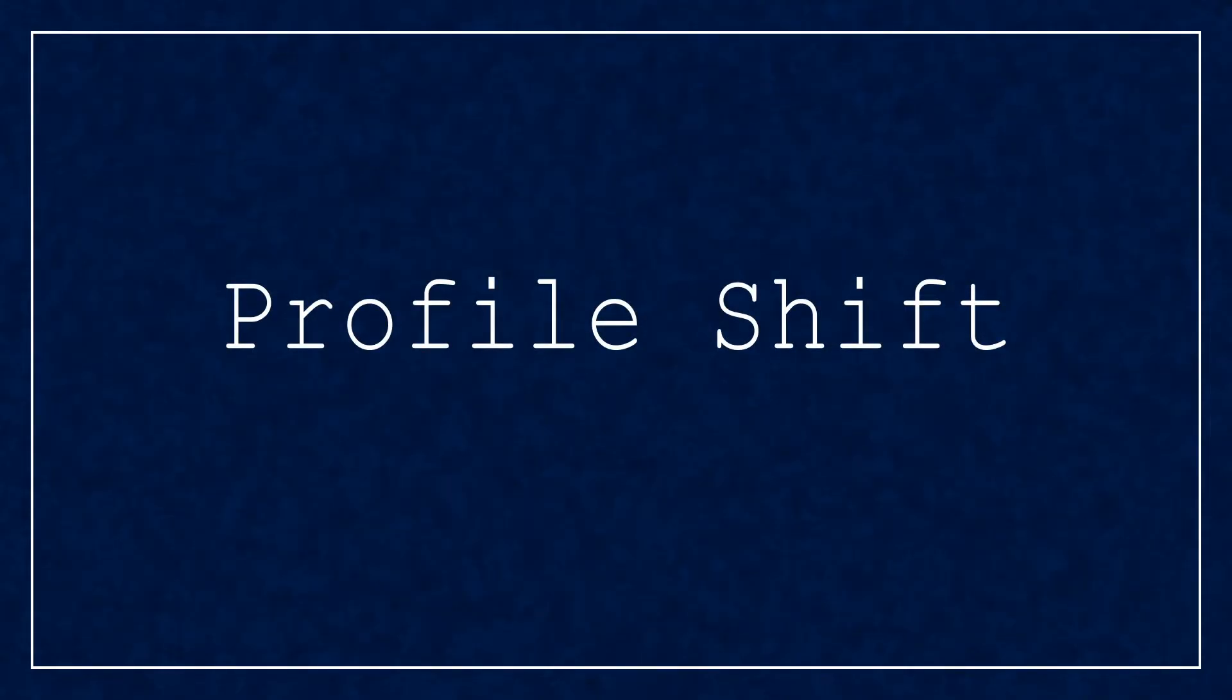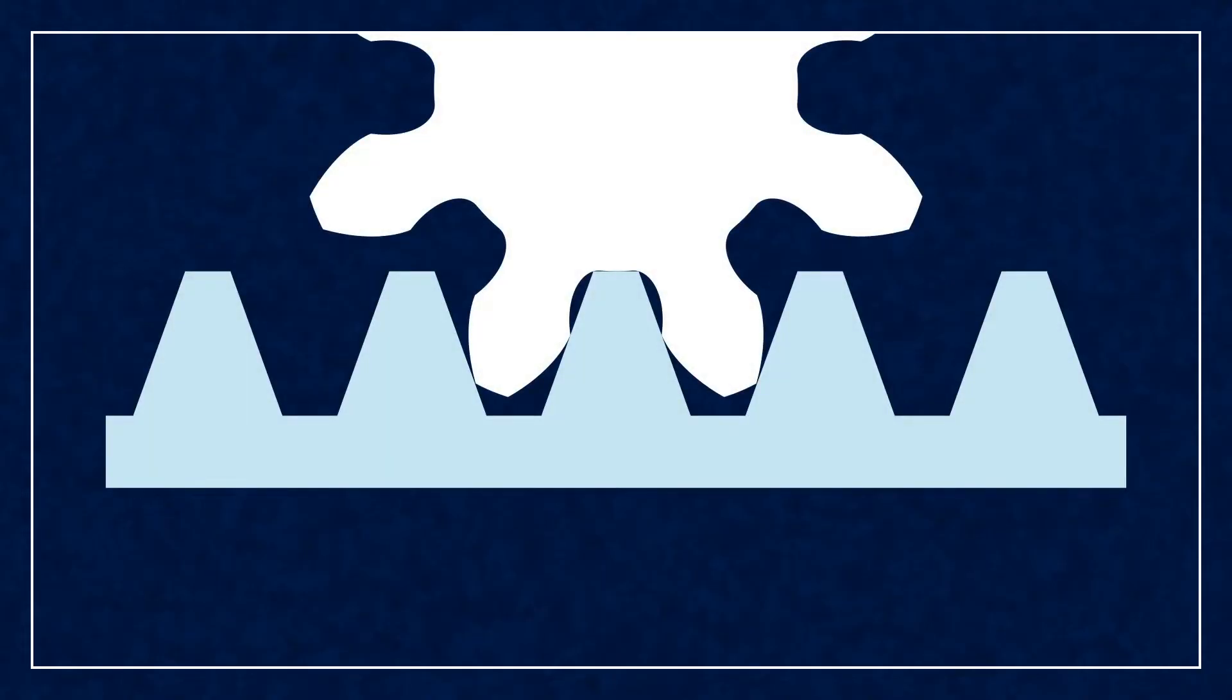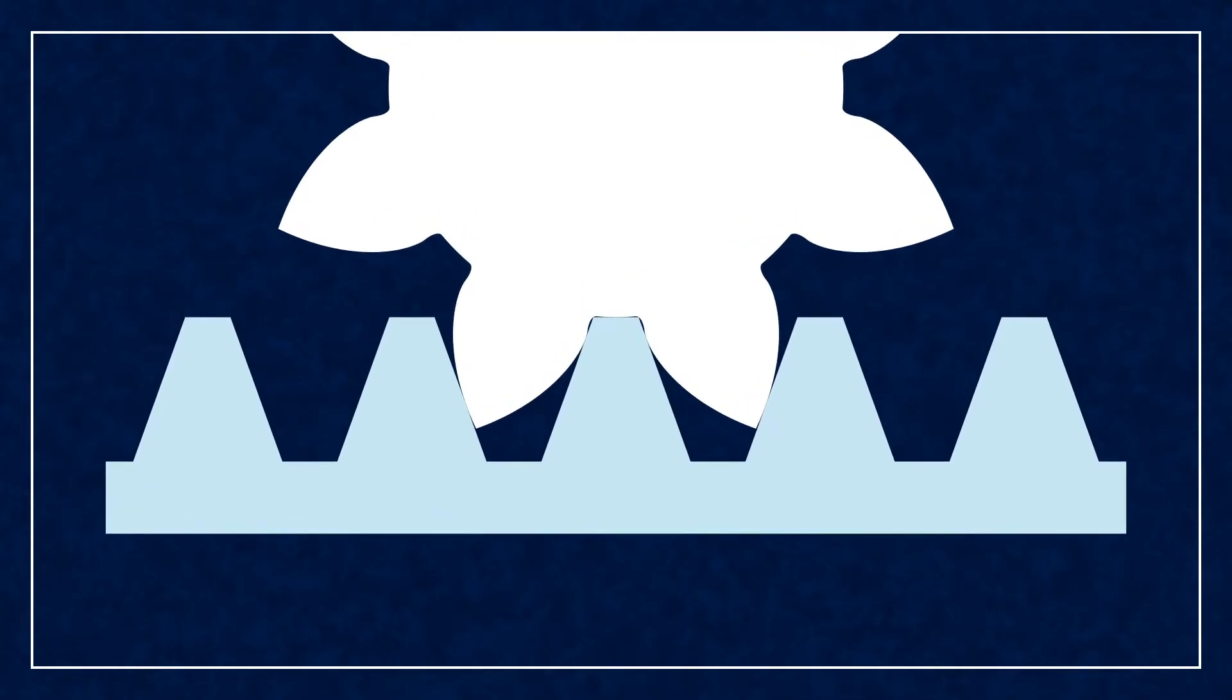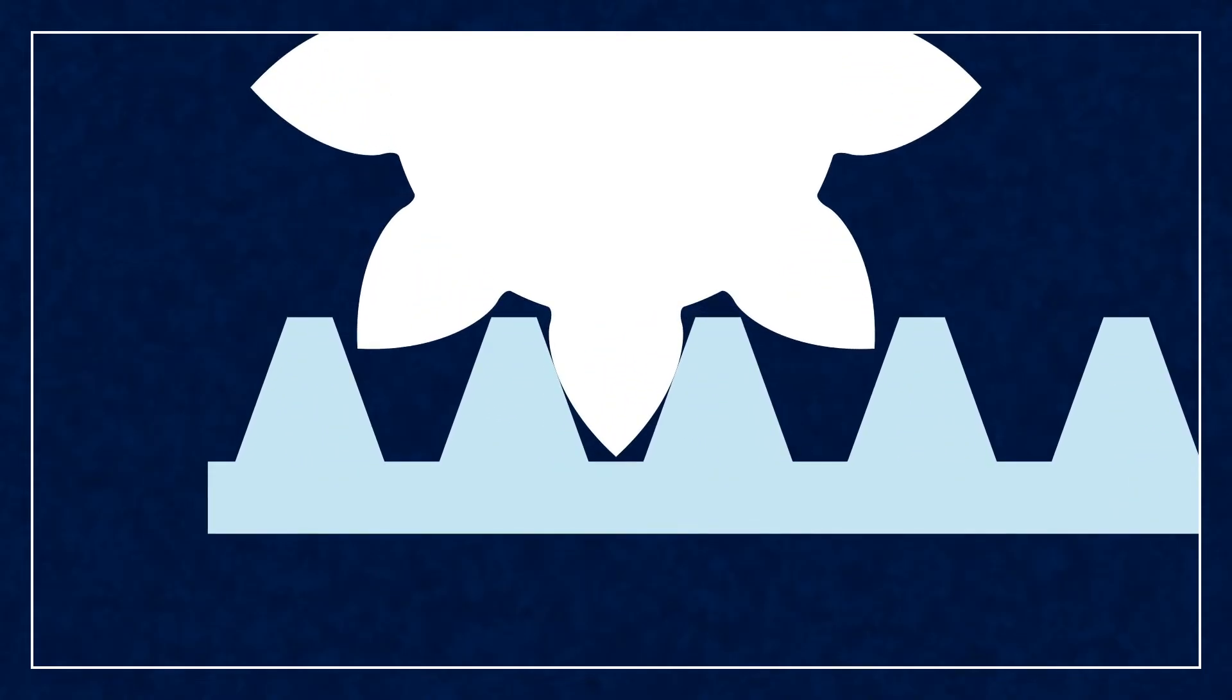The standard practice to combat the adverse effects of undercutting is the profile shift. Profile shifting is when you pull back the cutting tool from the standard radius. This makes both the addendum and dedendum radii larger and the gear teeth thicker.